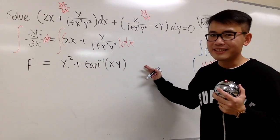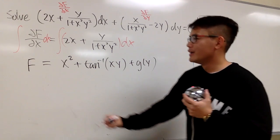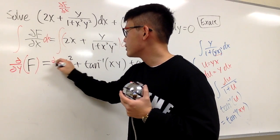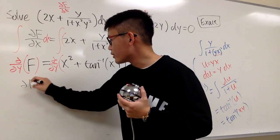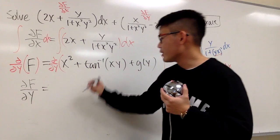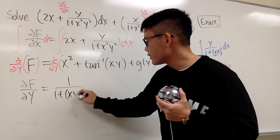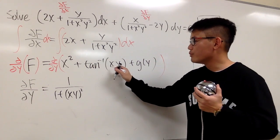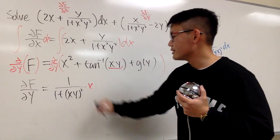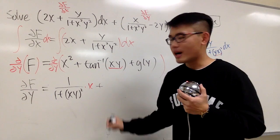We also need the constant — in the x world, a function of y alone is a constant, so we add g(y). Next, we take the partial of F with respect to y and set it equal to the second expression. On the right-hand side, x² gives 0. The derivative of arctan(xy) with respect to y is 1/(1 + (xy)²) times x by the chain rule, since x is constant and y is the variable.